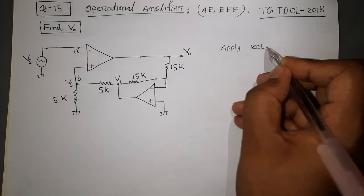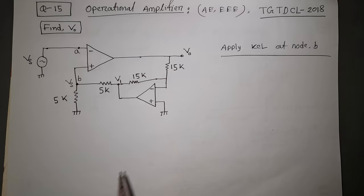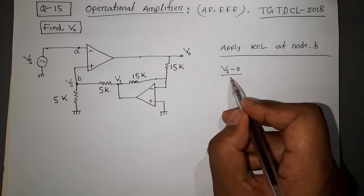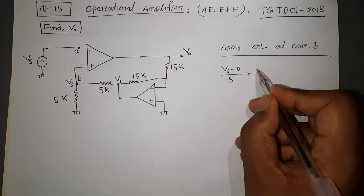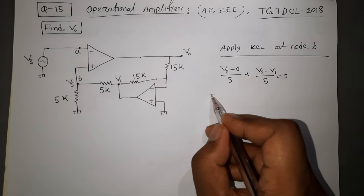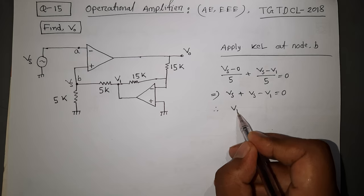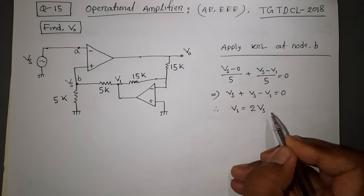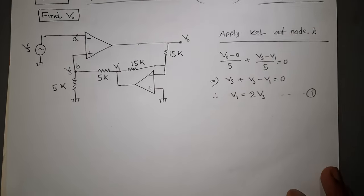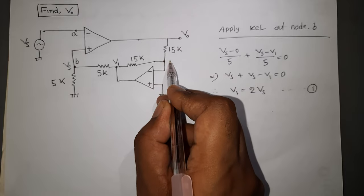Apply KCL at node B. For node B, apply KCL equal to 0. The equation is Bs plus Bs minus B1 equals 0, or B2 equals 2Bs.